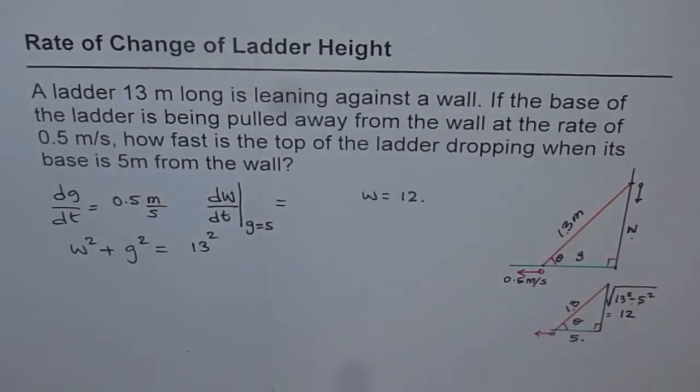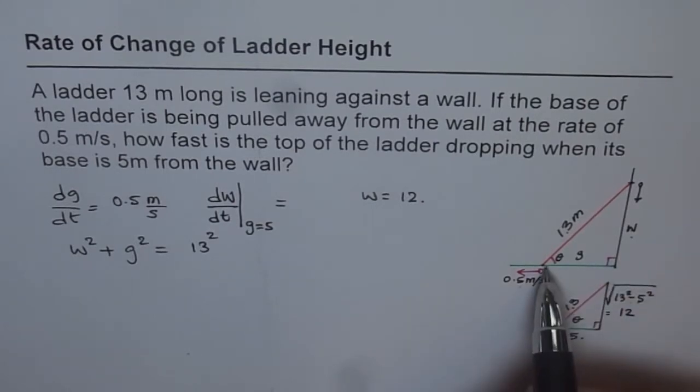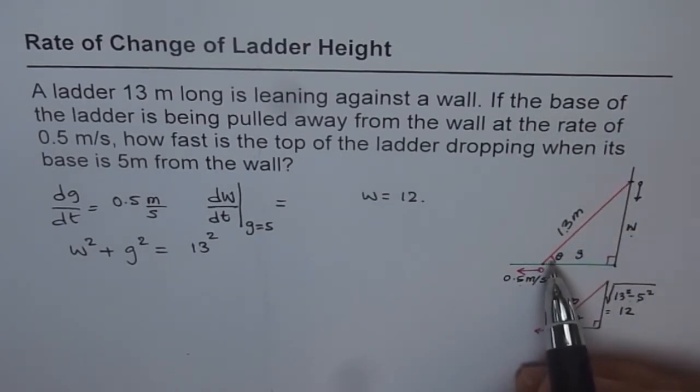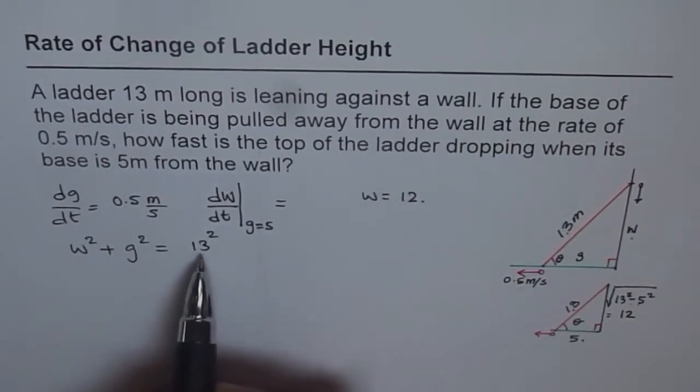We say W squared plus G squared equals 13 squared. That is how these three things are related. At any instance of time, the distance of the foot of the ladder from the wall squared, plus height squared, is always equal to the length of the ladder, which is fixed, which is not changing. Now, if I find the derivative of this function with respect to time, what do I get?